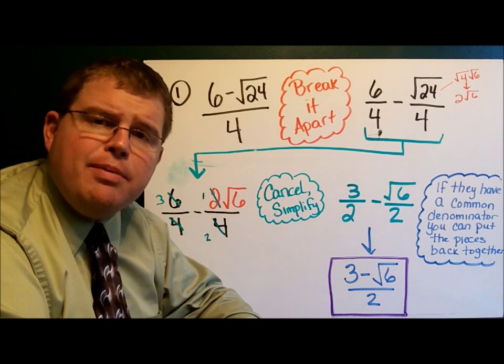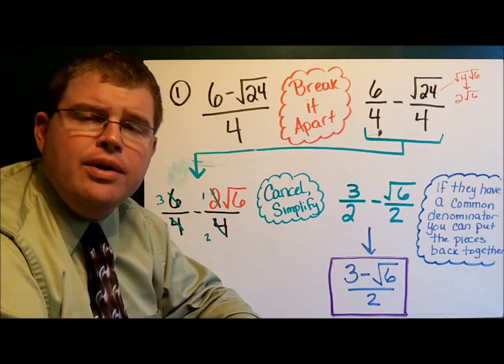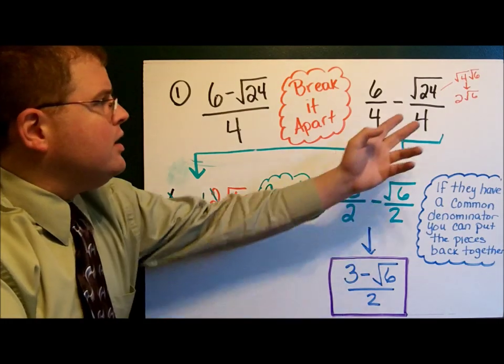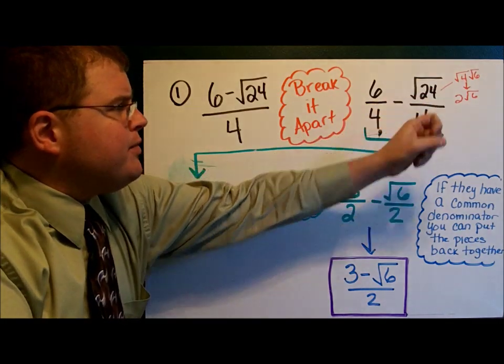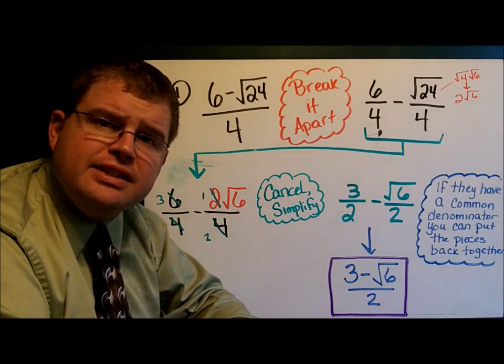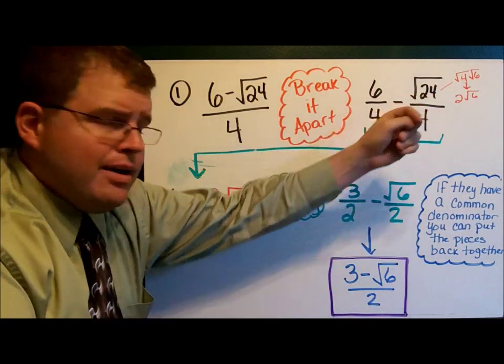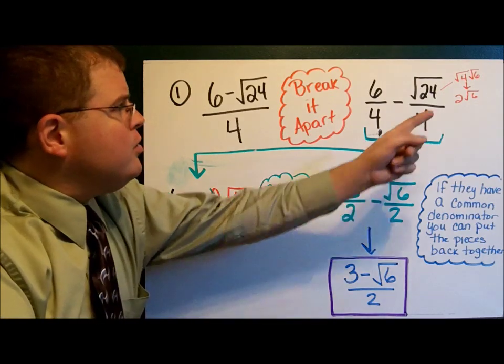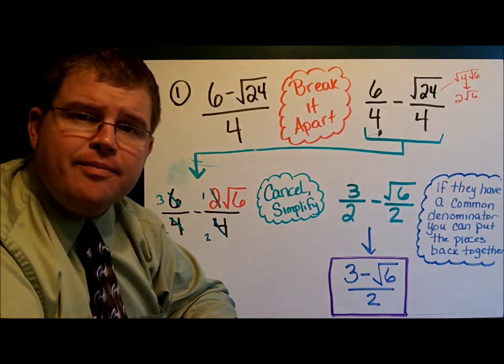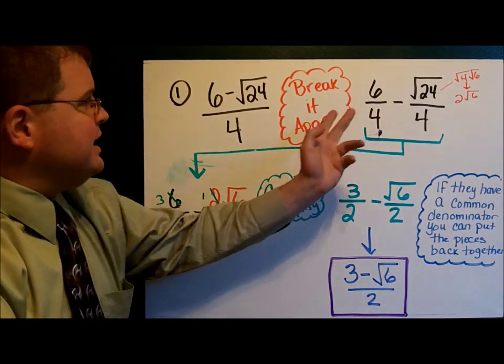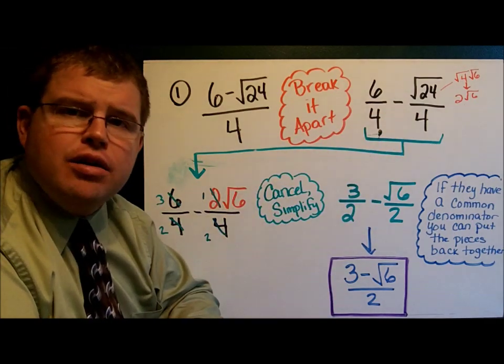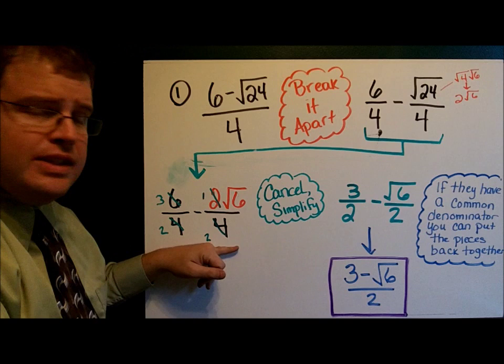Once you have two separate fractions, what you need to do is go ahead and simplify the square root. The square root of 24 simplifies to 2 square roots of 6. So we'll take out that square root of 24 and replace it with 2 square roots of 6. That leaves me 6 over 4 minus 2 square roots of 6 over 4.